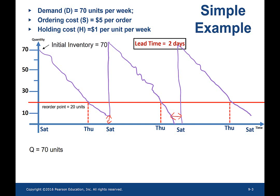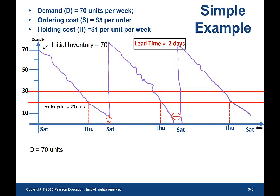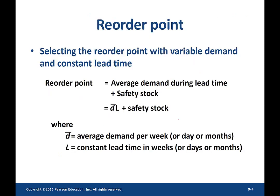Just to address the variability in the demand, the buyer may have to carry a little bit more than 20 units. In other words, the reorder point needs to be higher than 20 units. The difference between the old and new reorder points is called safety stock. So the reorder point is equal to the sum of the average demand during the lead time and safety stock.